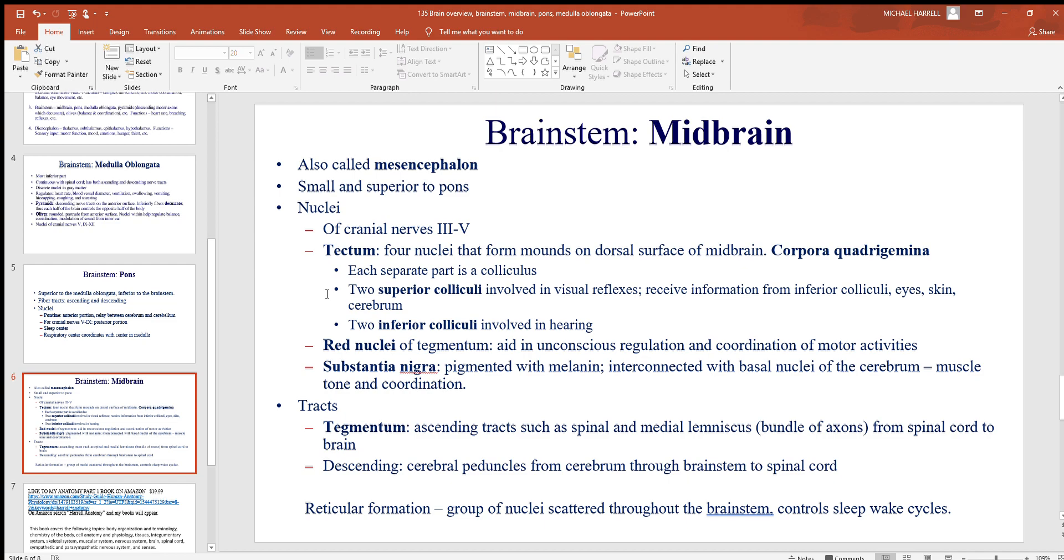These are involved with visual reflexes. Say if a ball or something comes at your face very quickly, the muscles in your neck will contract to move your head out of the way, prevent you from being damaged - that's a good reflex to have. They receive information from the inferior colliculi, eyes, skin, and so on. It's like somebody also with the skin - somebody touches you on the shoulder from behind, you instinctively turn and look in that direction.